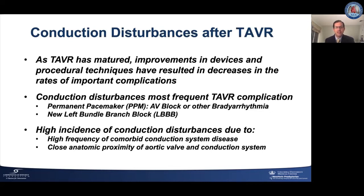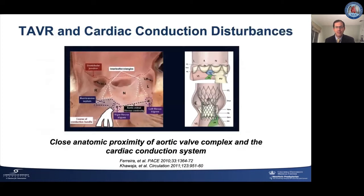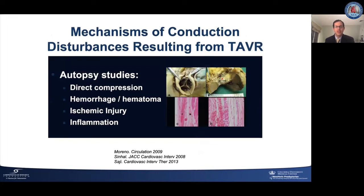The relatively high incidence of these conduction disturbances after TAVR is believed to be due to both the high frequency of comorbid conduction system disease in patients with AS, as well as the close anatomic proximity of the aortic valve and the conduction system. The bundle of His arises from the AV node low in the right atrium and courses behind the membranous septum before piercing through to the left side of the heart to give rise to the left bundle. The membranous septum lies immediately beneath the trigone between the right and non-coronary cusps of the aortic valve, proximal to the distal landing zone of the transcatheter heart valve, rendering the conduction system susceptible to injury during valve implantation.